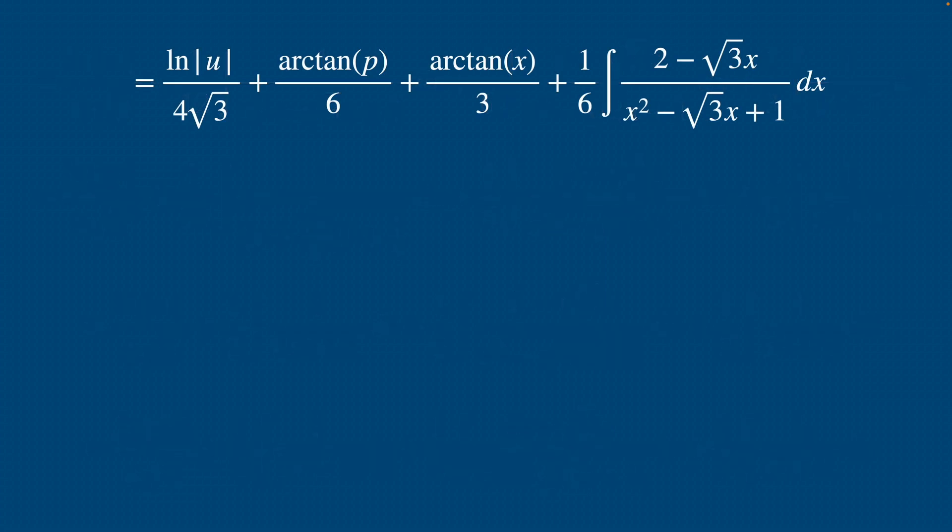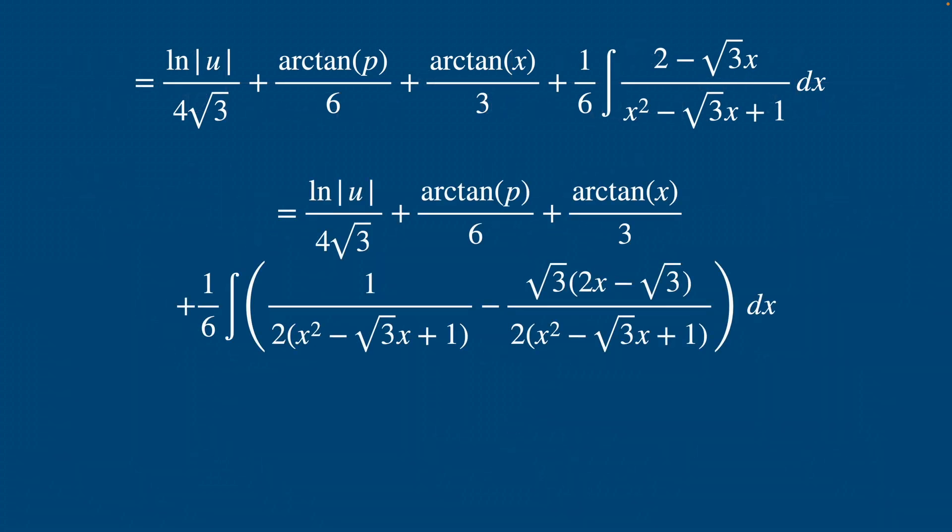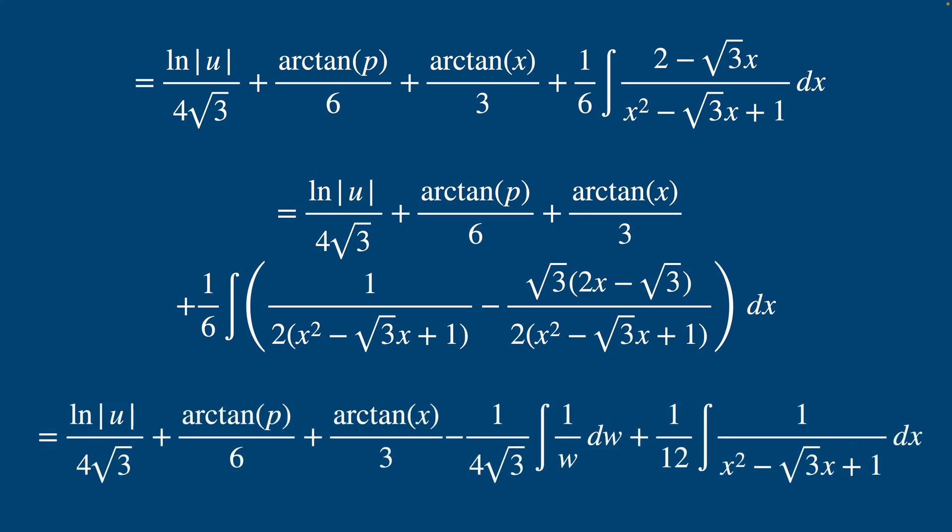So for the last integral here, we just substitute in w for x squared minus root 3x plus 1 and dw for 2x minus root 3 dx like so. And then the integral of 1 over w is obviously ln w.